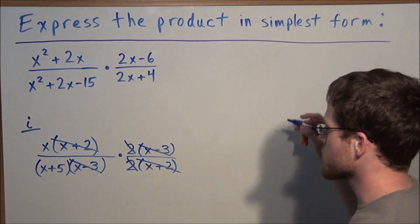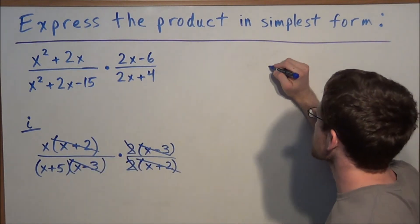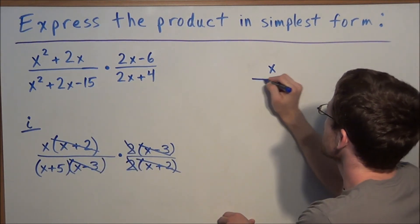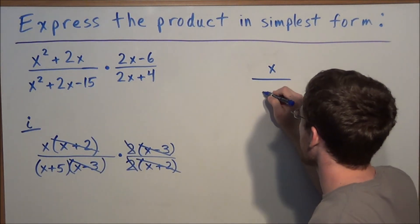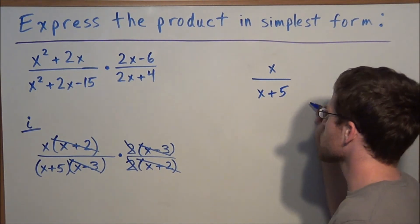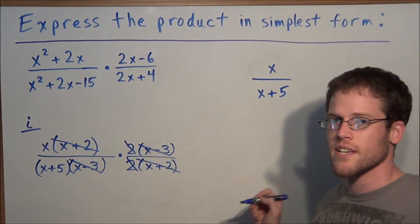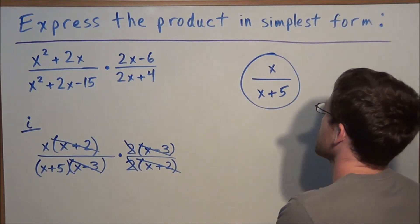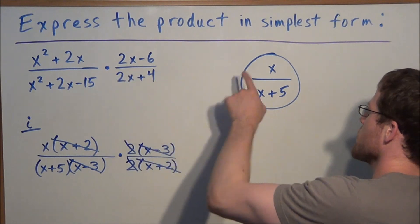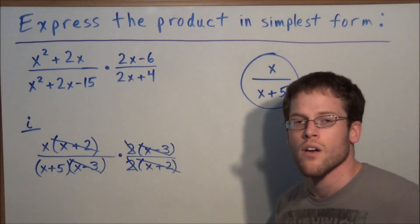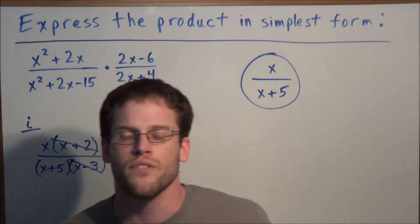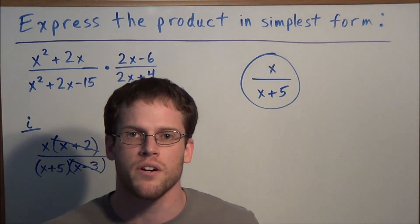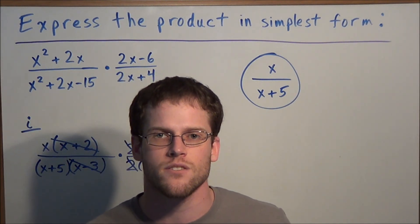So now our next step is to just rewrite everything that's left. In the numerator we have x. In the denominator we have x plus 5. Now since these are the only terms remaining that we didn't cross out we could go ahead and circle this and label it as our answer. So we have this product is equal to x over x plus 5. Okay well this is going to conclude this video on multiplying rational expressions. Thank you all for watching and I hope that this was helpful.